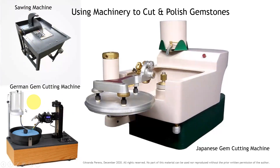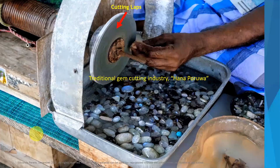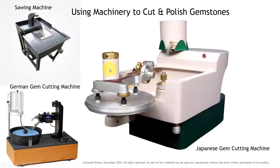This is German technology — a German gem cutting machine. The cutting lap is rotating horizontally. Earlier in Hanapooru it is vertical, but here it is horizontal. This is a water drop system to smooth the friction. The gemstone is connected to an iron or brass rod, and it is connected to the faceter.